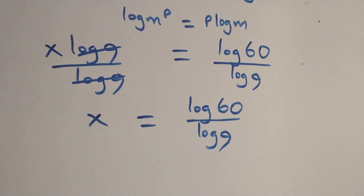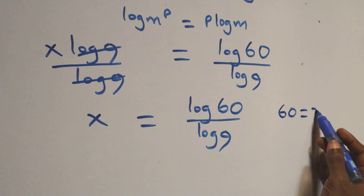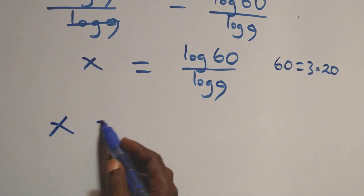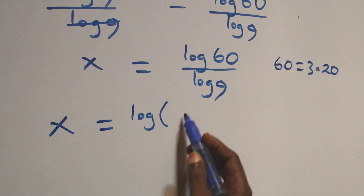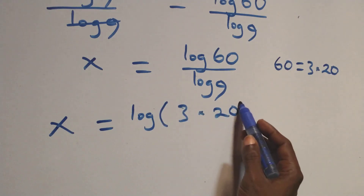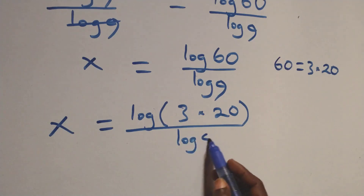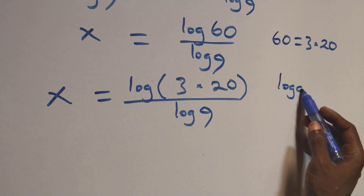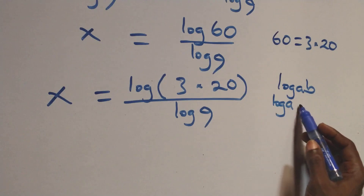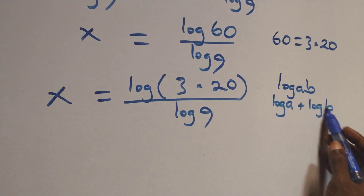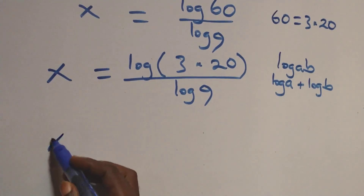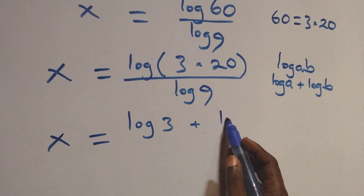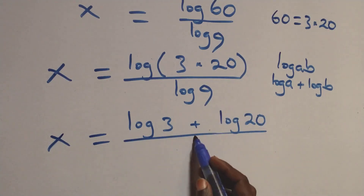Next, we write 60 as 3 times 20. So x = log(3×20) / log(9). Then applying the logarithm product rule — log(a·b) = log(a) + log(b) — this becomes x = (log(3) + log(20)) / log(9).